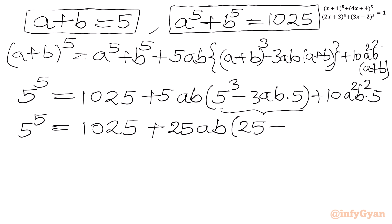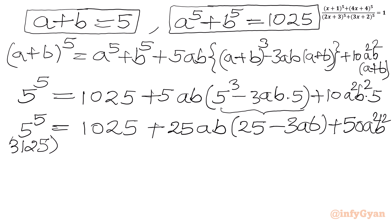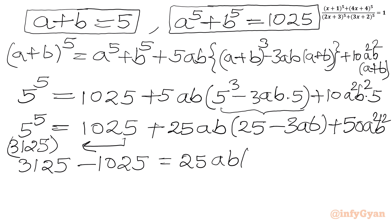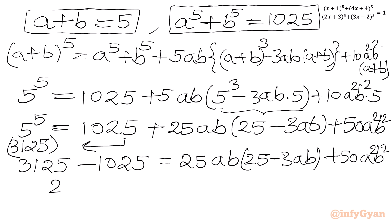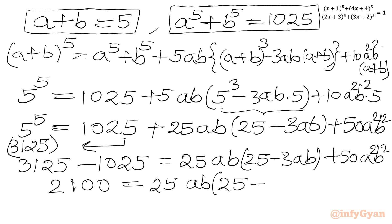In the bracket: 5 squared is 25 minus 3ab, and then 10 times 5 is 50 times a^2 b^2. Now 5^5 is 3125. We will take 1025 to the LHS, so 3125 minus 1025 equals 25ab times (25 minus 3ab) plus 50 times a^2 b^2. That gives us 2100 equal to 25ab(25 minus 3ab) plus 50 a^2 b^2.